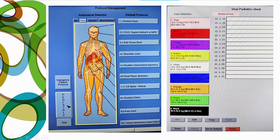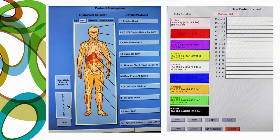Nowadays all CT vendors come with pre-loaded pediatric protocols in the software. You can choose the pediatric protocol according to the region being scanned. For example, selecting chest routine for a pediatric patient brings up a color-coded tailored protocol based on body weight. Selecting the pink color, for 6.0 to 7.5 kg body weight, provides an optimum dose protocol that also delivers good image quality.